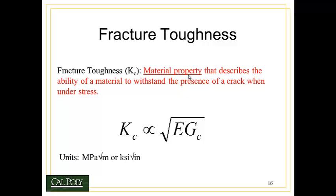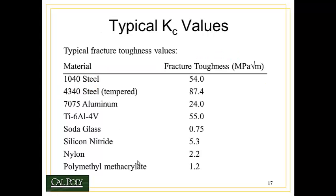So fracture toughness, or K sub C, is the material property that describes the ability of a material to withstand the presence of a crack when under stress. Or written mathematically, K sub C is proportional to the square root of E times G sub C, the static fracture toughness. So more often than not, we simply think of the fracture toughness, K sub C of a material, which has units, if you work it out, of megapascal square root meter, or in English units, KSI square root inch.